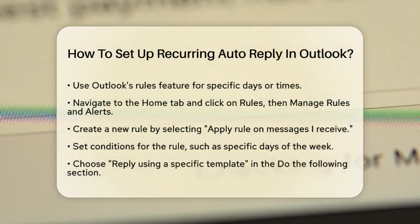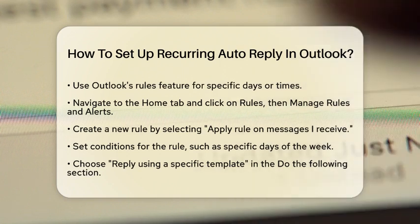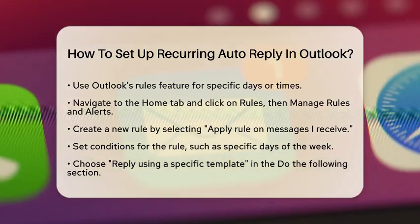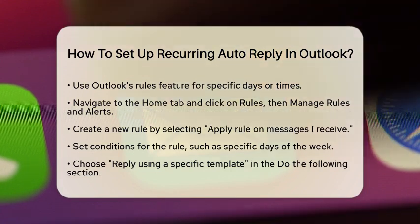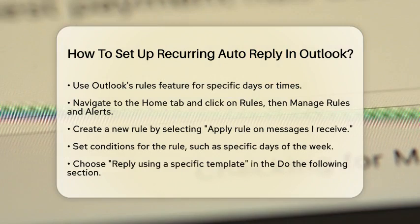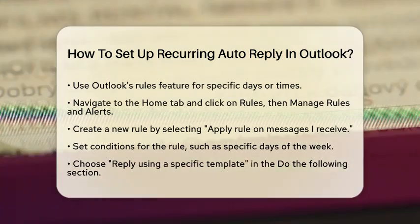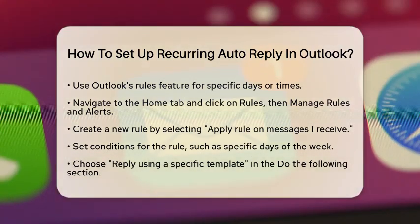Now, if you want to automate replies for specific days or times, you will need to use Outlook's Rules feature. Navigate to the Home tab and click on Rules, then Manage Rules and Alerts. Click on New Rule to create a new one. Choose Apply Rule on Messages I receive and set the conditions for when this rule should apply, such as specific days of the week.